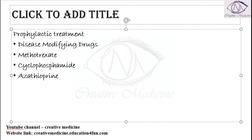Methotrexate inhibits folate synthesis — it inhibits the conversion of dihydrofolic acid to tetrahydrofolic acid, thus decreasing DNA synthesis overall.